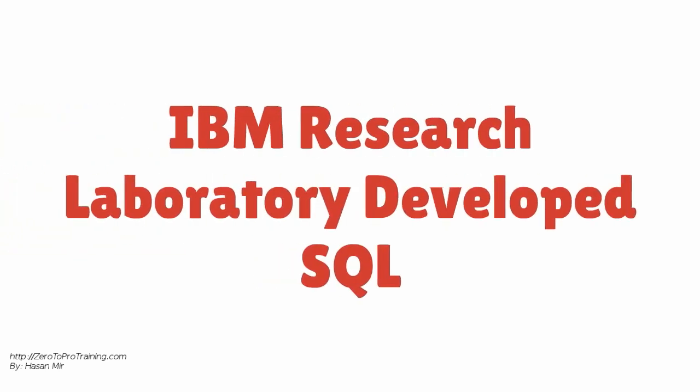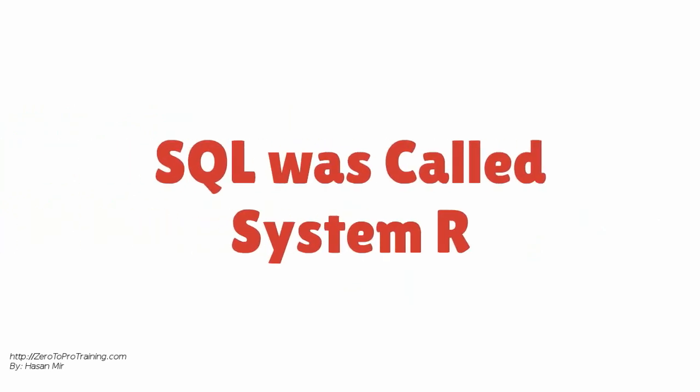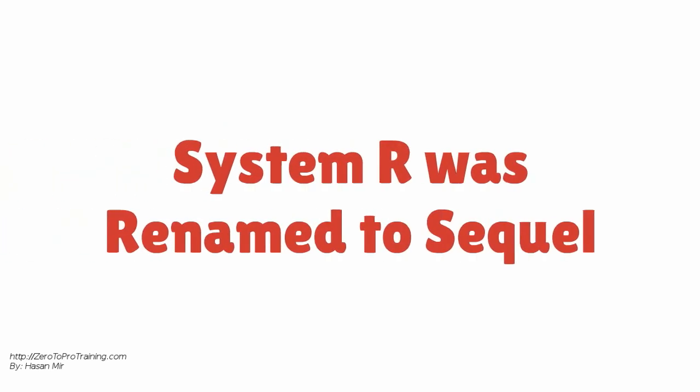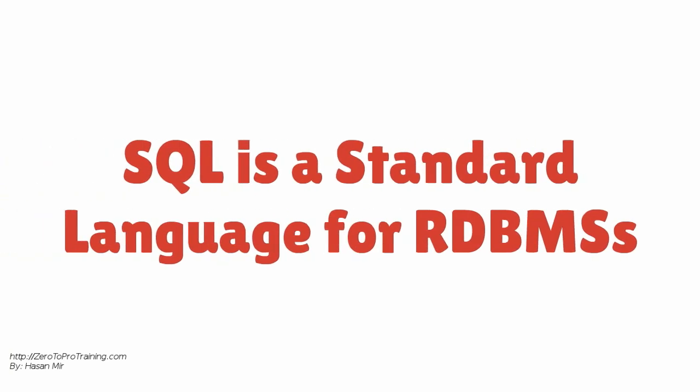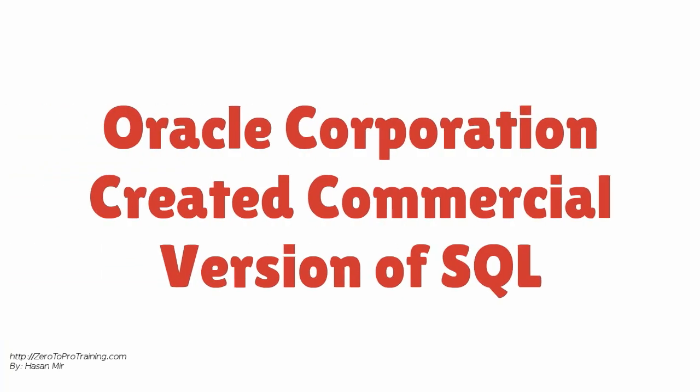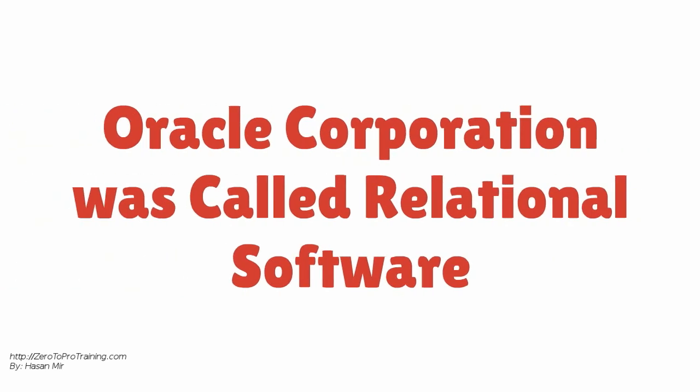Based on this theory, the IBM Research Laboratory developed a language to use with relational databases. The SQL language was originally called System R, and it was later renamed to SQL. It is now a standard language to be used with all relational databases. The Oracle Corporation introduced the first commercially available implementation of a relational database incorporating the SQL language. The company used to be known as Relational Software Incorporated at that time.